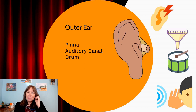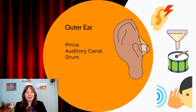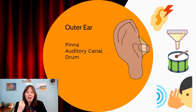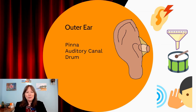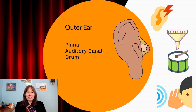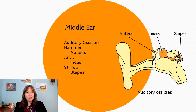Everybody's piercing their pinnas and doing lots of nice body art to their ears — that's really the part that helps us catch sound waves. Once our pinna catches the sound waves, it moves into our auditory canal and then to our eardrum. The eardrum is really the furthest part in the outer ear, and as the sound waves go in, they hit the eardrum and make it vibrate. That's really all there is to the outer ear.